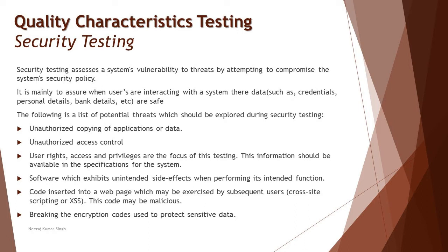User rights, accesses, and privileges should be available in the specification of the system. Software which exhibits unintended side effects when performing intended functions is also a threat — the application was not supposed to do something on its own. Activity logs act as notifications, for example: 'Someone tried accessing your account from this location and IP address,' which tries to prevent a security breach and prompts you to change your password immediately.